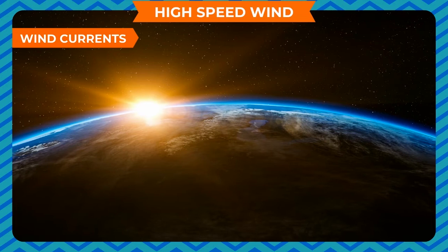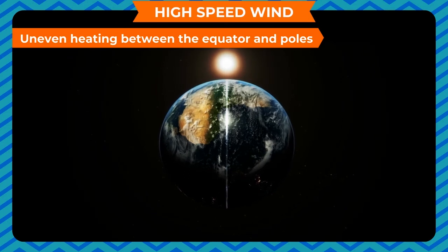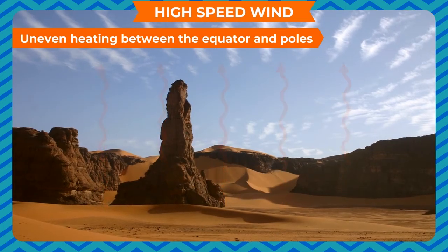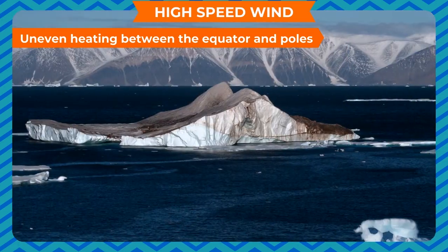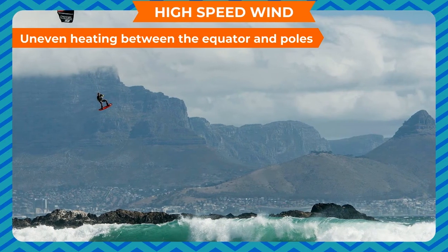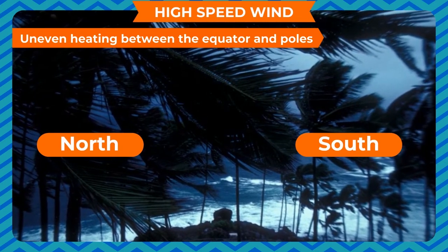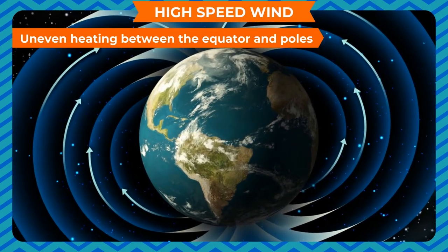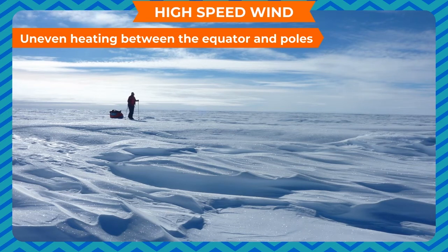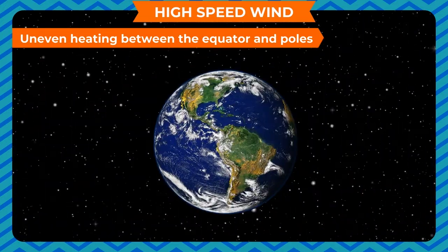Wind currents are generated due to uneven heating of the earth. They arise from two situations: uneven heating between the equator and the poles, and uneven heating of land and water. Regions close to the equator receive maximum heat from the sun; the air becomes warm and rises, producing a low pressure region. As a result, cooler air from either side of the equator — up to about 30 degrees latitude — moves in to take its place. At the poles, the air is cooler than at latitudes of about 60 degrees; warm air at those latitudes rises, and cold polar winds move in, setting up a pattern of wind circulation on the earth.